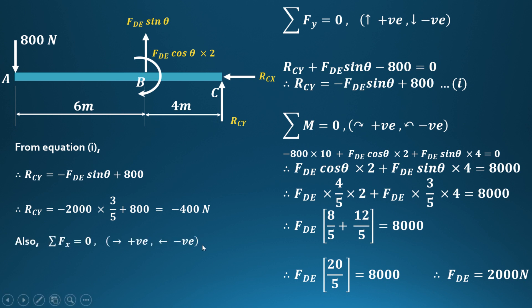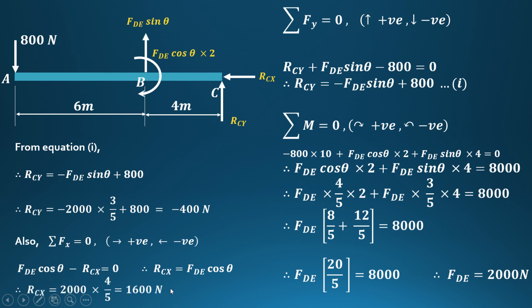For the horizontal reaction, summation of Fx equals zero, with forces to the right as positive and left as negative. FDE·cos θ acts in the positive x-direction and RCx acts in the negative x-direction. Therefore RCx = FDE·cos θ = 2000×(4/5) = 1600 N. In this way we can find out the reaction at point C.